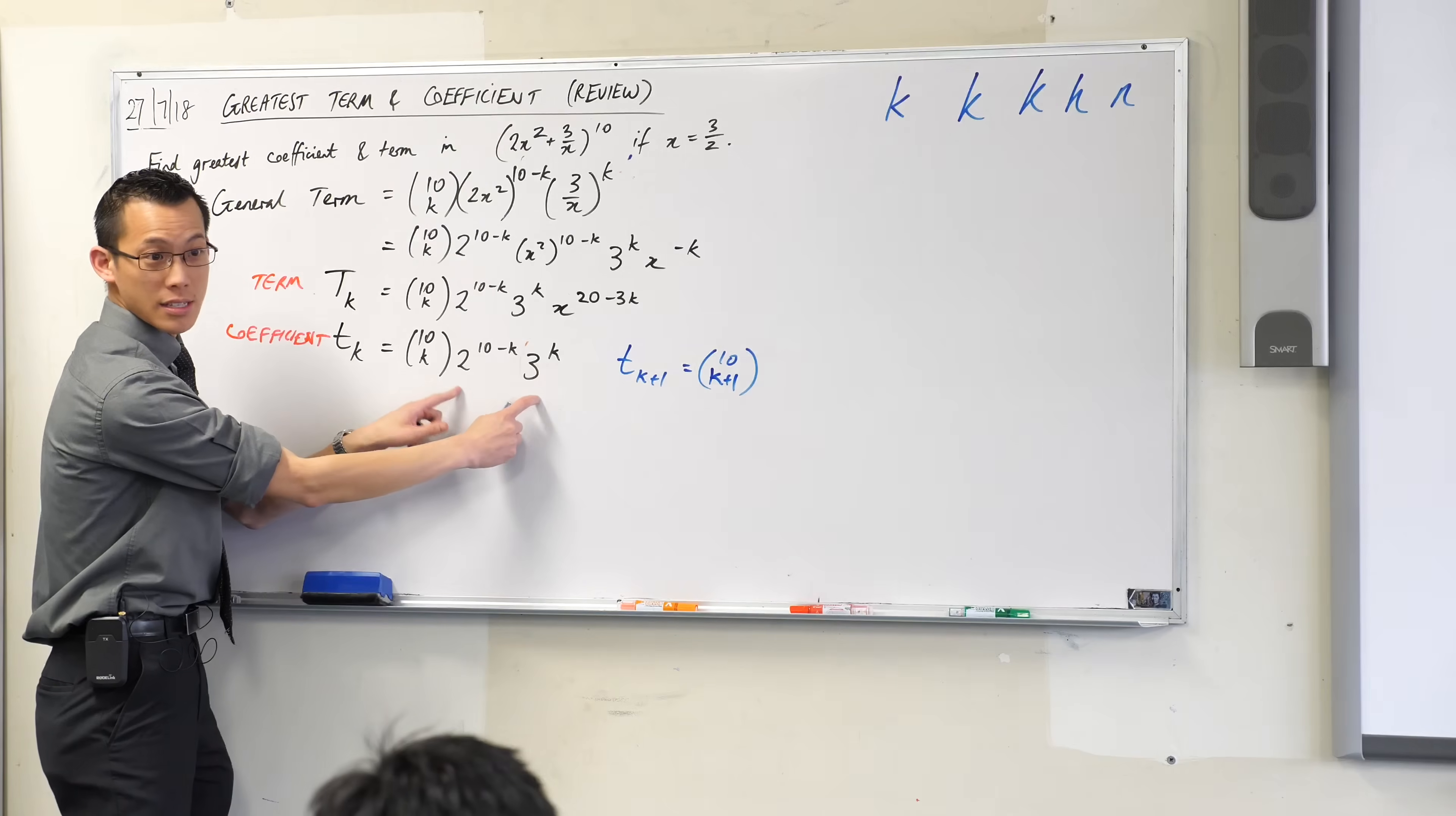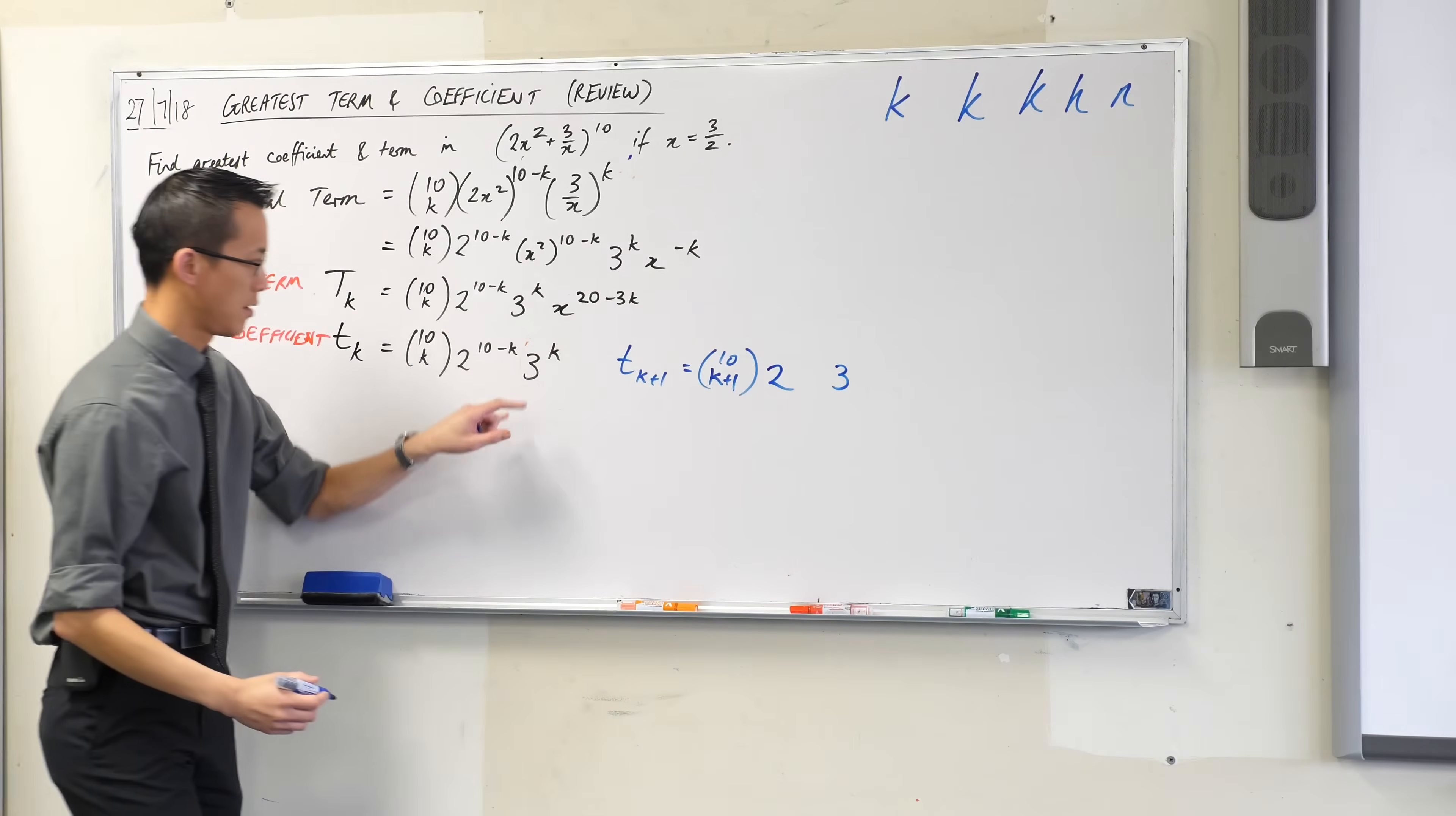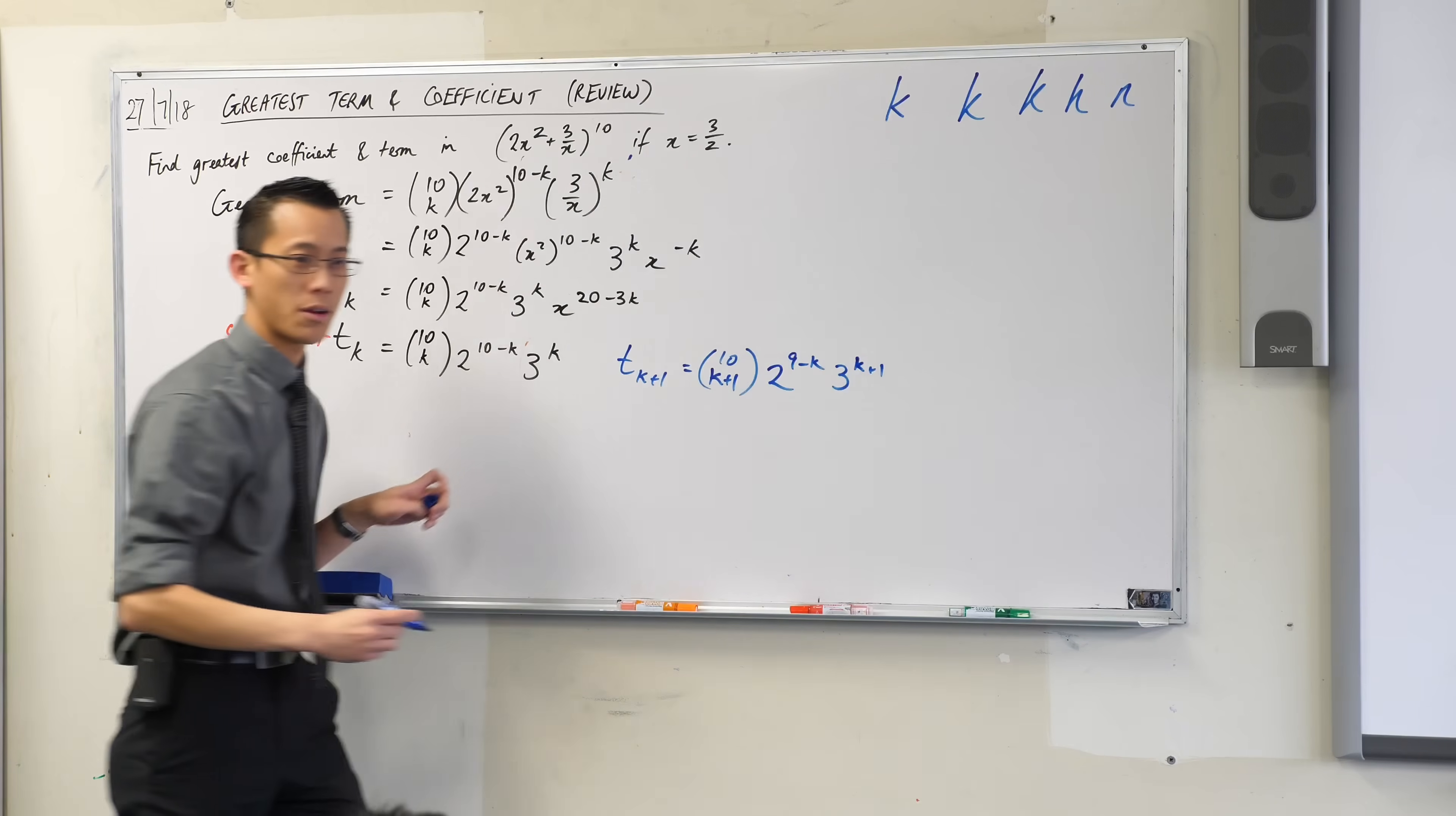And then what happens to these guys, these parts of the coefficient? Well, one of them is going to go up, namely this one, and the other one's going to go down, namely this one. So my 2s and my 3s, this one that was k is going to become k plus 1, it increases. And then this one here, 10 minus k, it will decrease, so that's why it's 9 minus k.